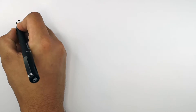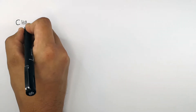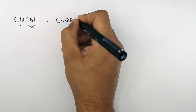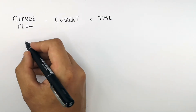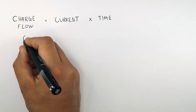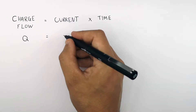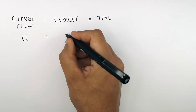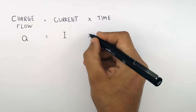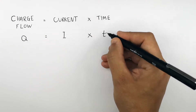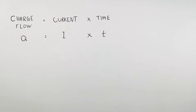The formula linking charge, current and time is: charge flow equals current times time. The symbol for charge is Q (capital Q), the symbol for current is I (capital I), and the symbol for time is lowercase t. So Q equals I times T.